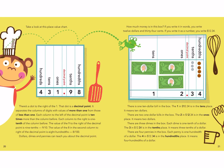Dollars, dimes, and pennies can teach you about the decimal point. How much money is in this box? If you write it as a number, you write $12.34. There is one $10 bill in the box — the 1 in $12.34 is in the tens place, it means $10. There are two $1 bills — the 2 is in the ones place, it means $2. There are three dimes — each dime is one-tenth of a dollar, meaning you need 10 dimes to make $1. The 3 is in the tenths place, meaning three tenths of a dollar. There are four pennies — each penny is one-hundredth of a dollar, so the 4 is in the hundredths place, meaning four hundredths of a dollar.